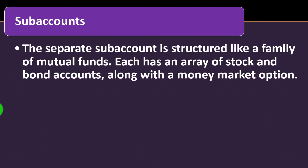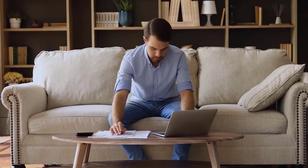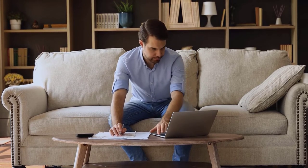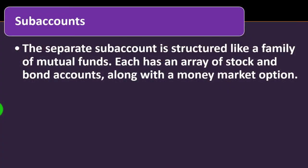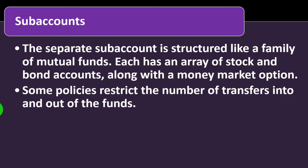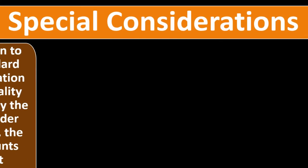The separate sub-accounts are structured like a family of mutual funds — possibly index funds — to tie into the flexibility of the market, which could lead to larger gains but also adds more risk. Each sub-account has an array of stock and bond accounts along with a money market option. Some policies restrict the number of transfers into and out of the funds; if a policyholder exceeds the number of transfers in a year and the account performs poorly, they may need to pay a higher premium.